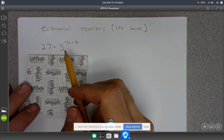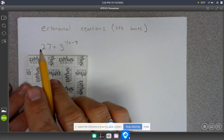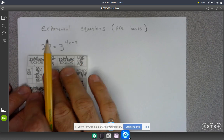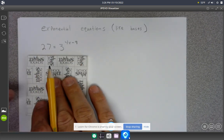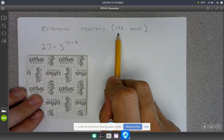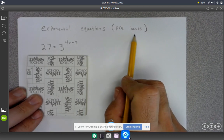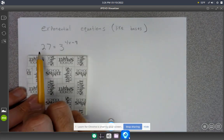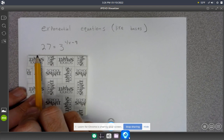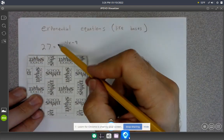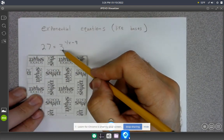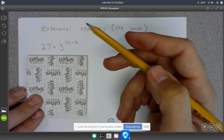I've got an equation where my variable is in the exponent slot. Now this particular type that we're going to work on, I call like bases, because what we're going to do is rewrite both sides of the equation so that they have the same base - the number that is being raised to an exponent.